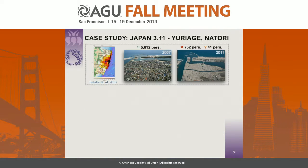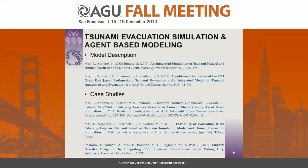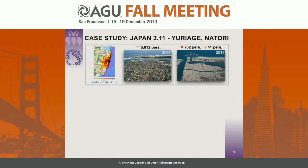Moving to the case study: the upper figure shows Natori Yuriage, an area in Natori city about 50 kilometers north of Sendai International Airport. It's a very flat, plain area. Around 5,000 people were living there and suffered massive destruction from the tsunami. Approximately 750 people were killed by the tsunami in this area.